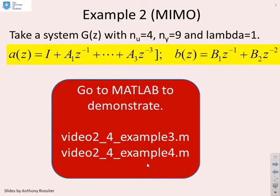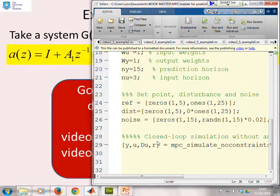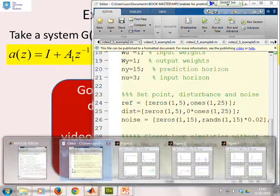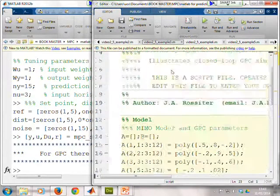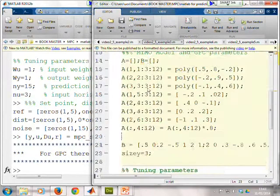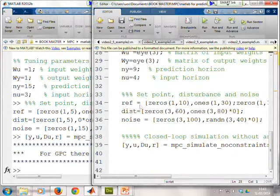Next example then, multivariable example. So this one's in example three and example four. Just open up that other window. Now, multivariable example, here it is. I'm just going to run the whole file in one go, but just show you'll see the code's the same as before. I just enter my A and B parameters, enter my weights, enter my horizons, define my reference disturbance and noise. Here these have got to be three dimensional because there's three outputs, obviously. And then run the file.